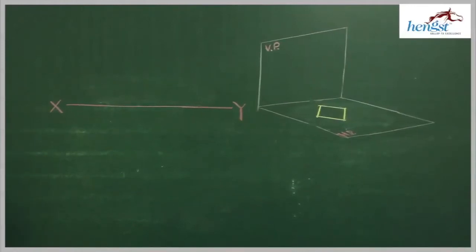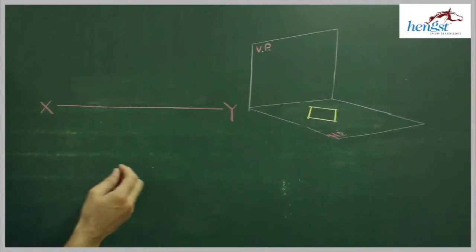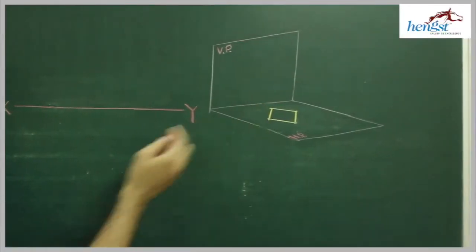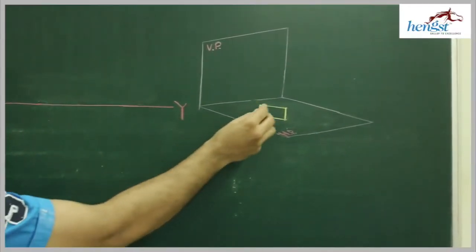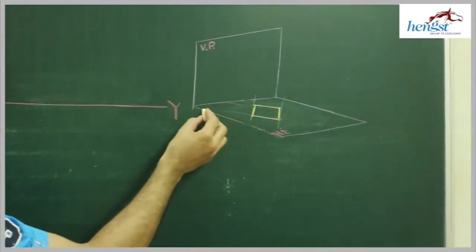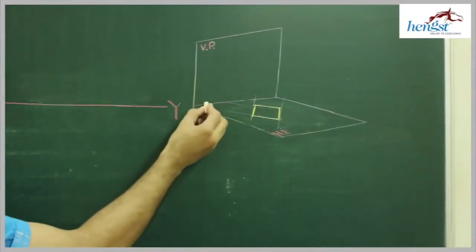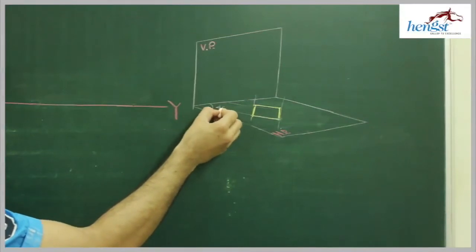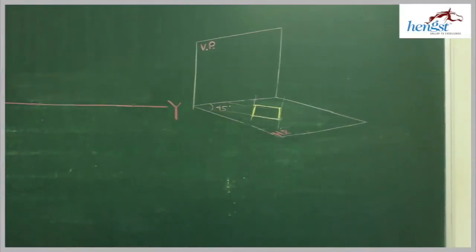In this problem, the plane is resting on HP and perpendicular to VP, with all sides equally inclined to VP. That means this side, this side, this side, and this side are all equally inclined to the vertical plane. That is possible only in the case of a square, and that's also at 45-45 degrees.